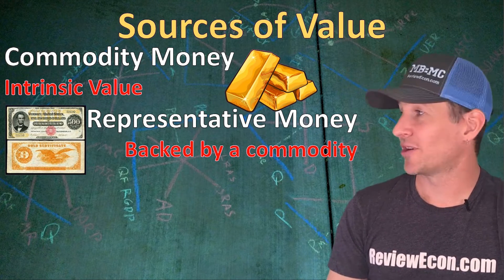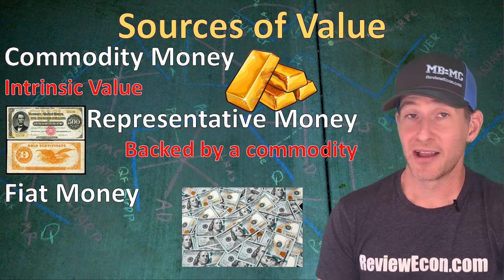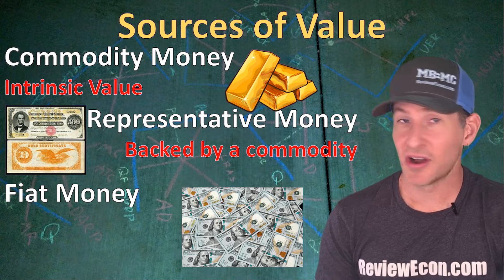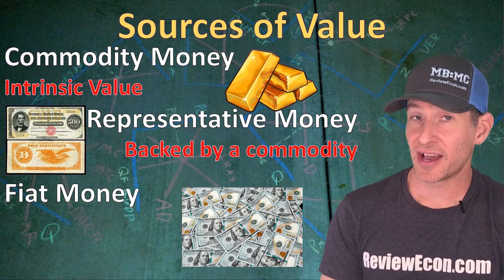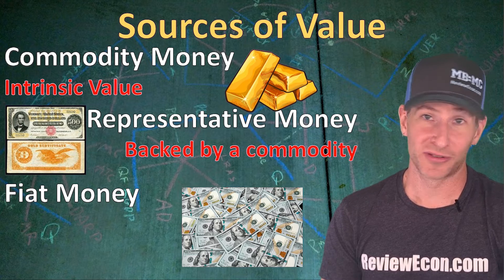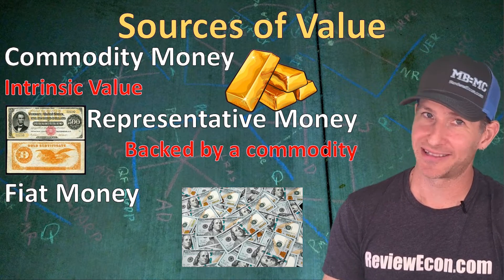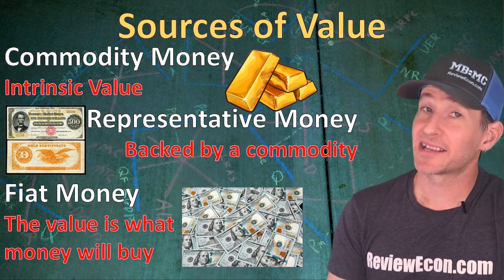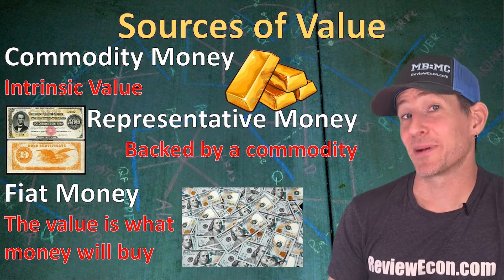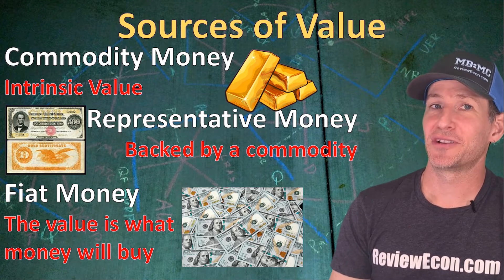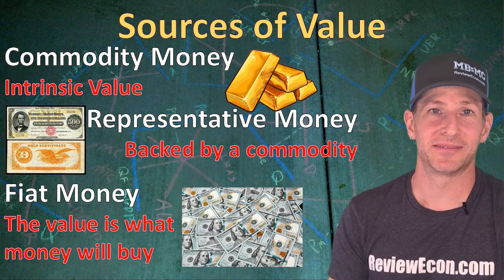Today, most modern economies don't have representative money anymore — they have what is called fiat money. Fiat money represents value but has no intrinsic value and has no commodity backing it. For the United States dollar, there is no gold, no silver, no cowrie shells, and no wheat. Today our money has value because it can be used to purchase goods and services, and it is backed by the United States government. That's why every US dollar says it is legal tender for all debts, public and private.